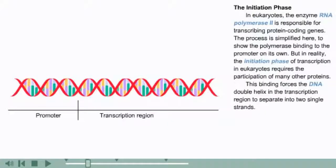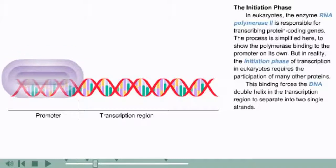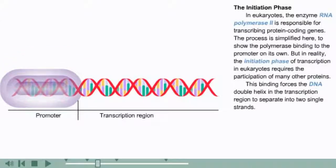In eukaryotes, the enzyme RNA polymerase II is responsible for transcribing protein-coding genes. The process is simplified here to show the polymerase binding to the promoter on its own, but in reality the initiation phase of transcription in eukaryotes